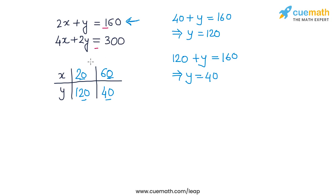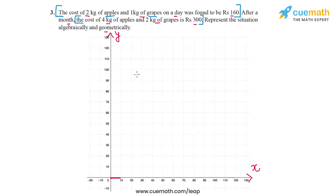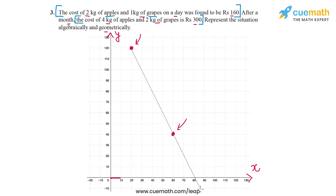Using these two solutions, let's plot the line for the first equation. On the graph, the point (20, 120) is plotted and the point (60, 40) is plotted. Drawing the line passing through these two points gives us the solution line corresponding to the first equation.